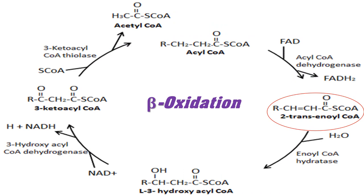The four main enzymes involved in beta oxidation are: (1) acyl-CoA dehydrogenase, (2) enoyl-CoA hydratase, (3) hydroxyacyl-CoA dehydrogenase, and (4) ketoacyl-CoA thiolase. Acyl-CoA dehydrogenase causes oxidation of acyl-CoA, forming trans-enoyl-CoA by creating a double bond between the second and third carbons from the CoA group, producing one FADH2.